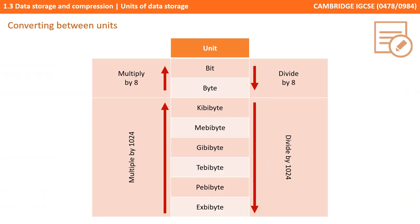You also need to understand that as we go up and down through the different units of data storage, the volume of bytes is multiplied or divided. So if we start with a tebibyte and move down to a gibibyte, we are multiplying by roughly 1,000 — or exactly 1,024. Likewise, from a mebibyte to a kibibyte, we're multiplying by 1,024. When going the other way, we're dividing. So if we have mebibytes and want to work out the number of kibibytes, we divide by roughly 1,000 or exactly 1,024.